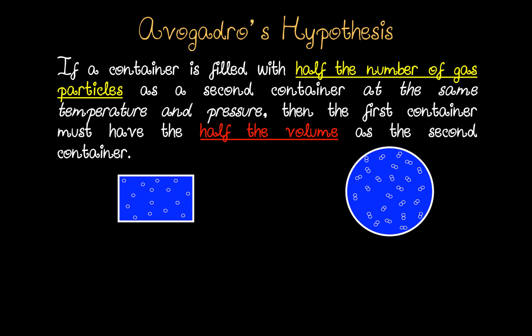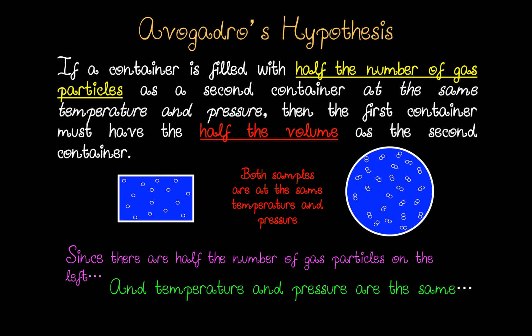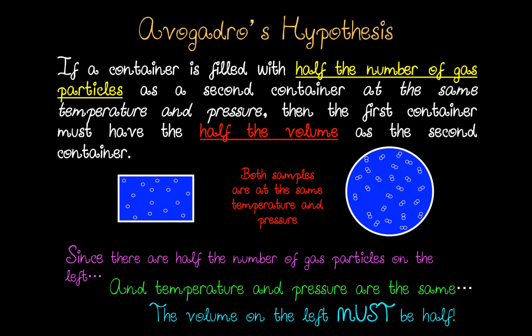Now if a container is filled with half the number of gas particles as a second container at the same temperature and pressure, then the first container must have half the volume of the second container. Both samples are at the same temperature and pressure. However, since there are only half the number of gas particles on the left, but temperature and pressure are the same, the volume occupied by the gas on the left must be half the volume of the container on the right.